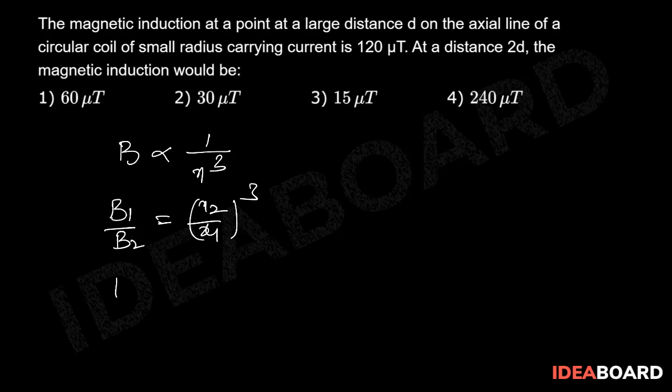So B₁, which is 120 microtesla, divided by B₂ equals 2d divided by d whole cube. The d's cancel out.